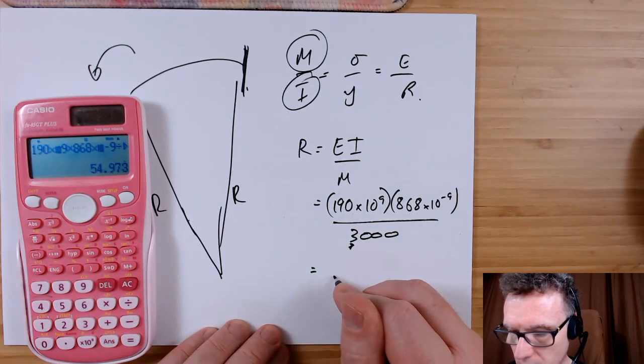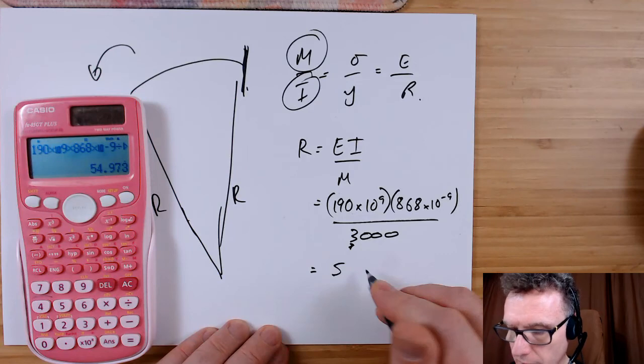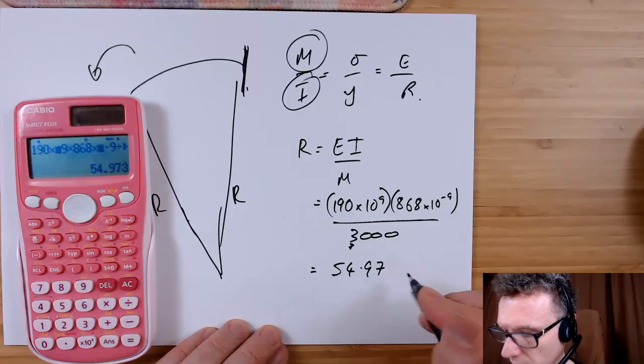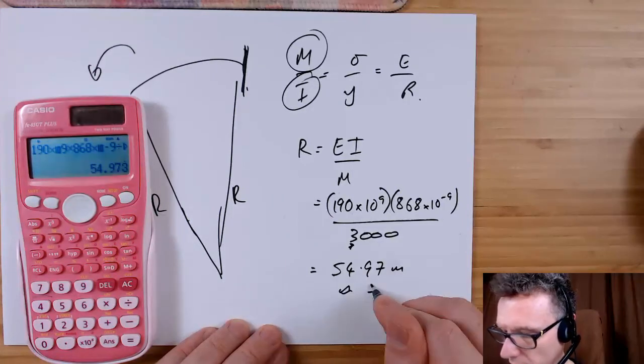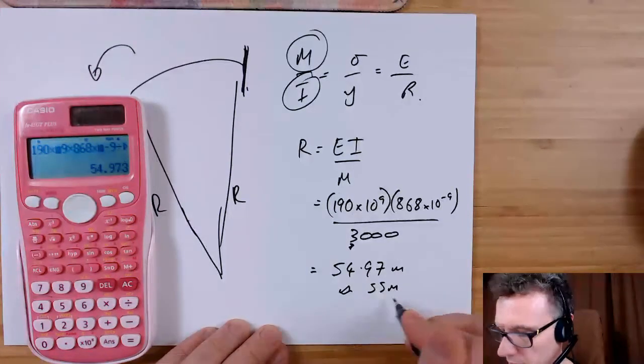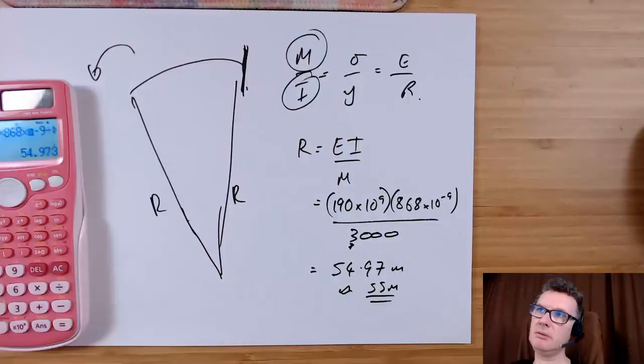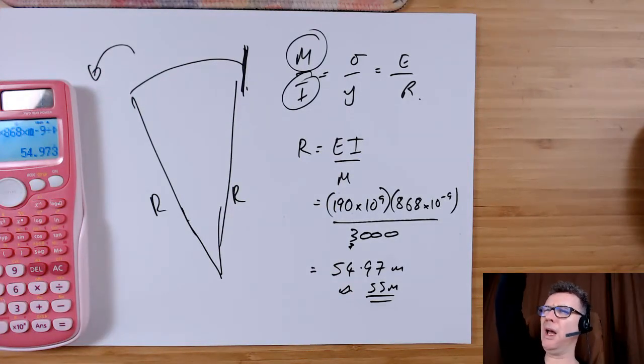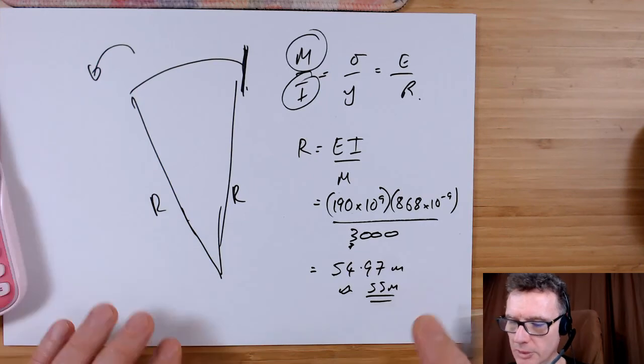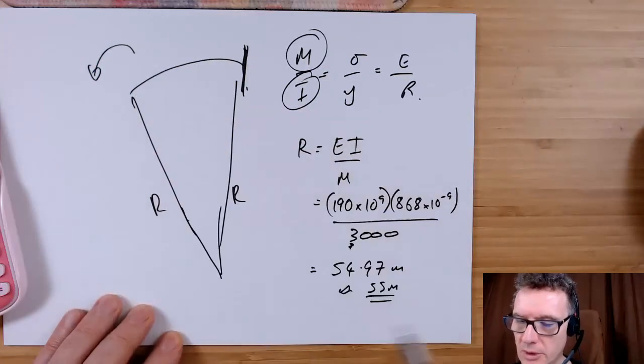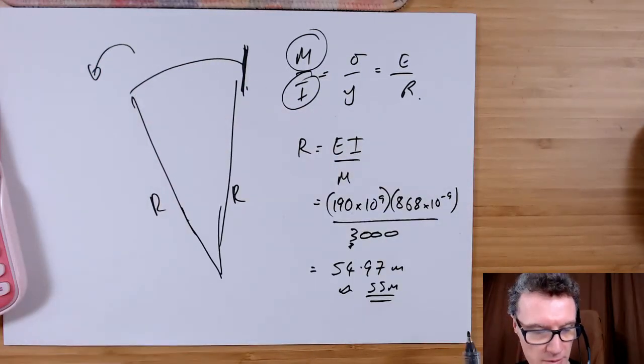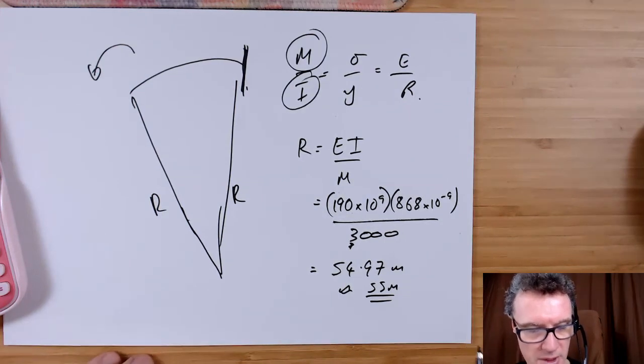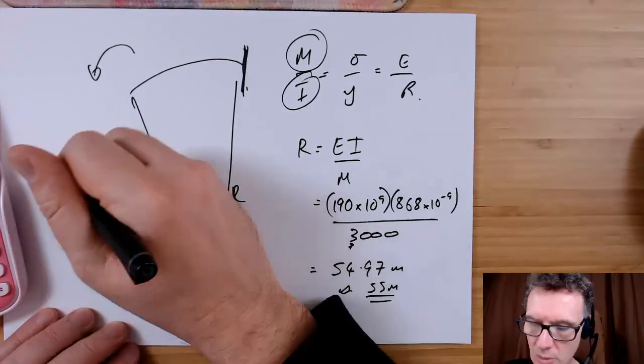So, oh god, yes, a big number: 54.97 meters. So therefore, let's say 55 amongst friends. So to try and fit a curve around this, you'd have to go way, way, way away from the beam to try and fit a circle around that deflection.